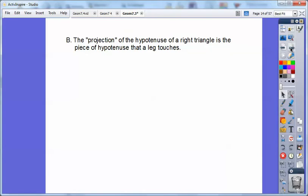Okay, and there's this thing called a projection. The projection of a hypotenuse of a right triangle is the piece of the hypotenuse that the leg touches. So for example, see there's that altitude BD going down there. It cuts that hypotenuse into two pieces, AD and DC. Those are both projection pieces. So AD is the projection because this piece of the hypotenuse is touching this leg. So it's the projection with this leg.